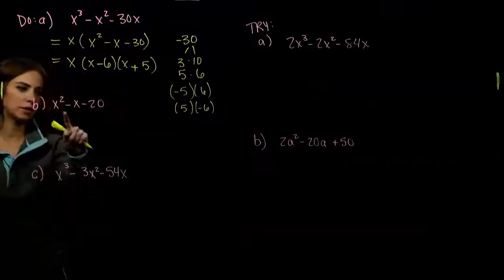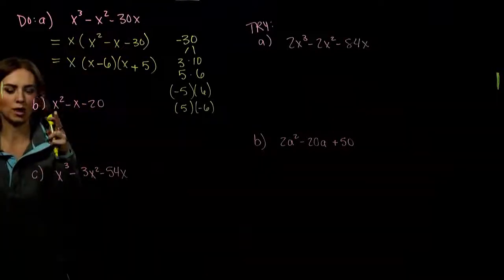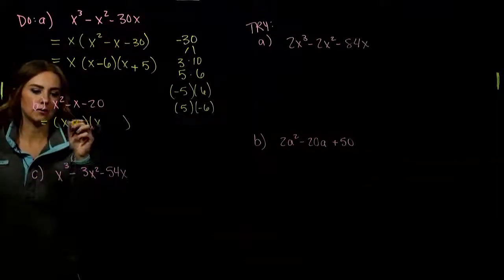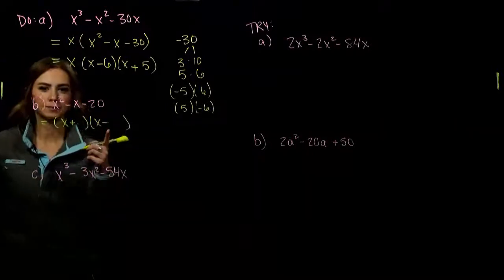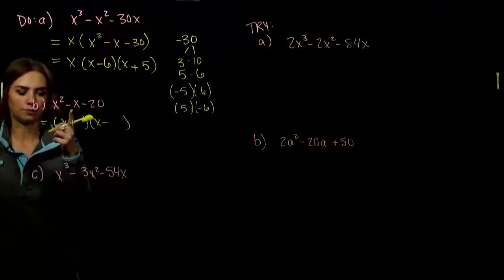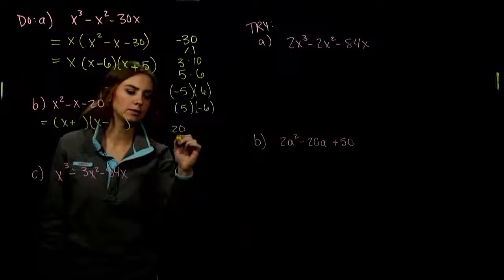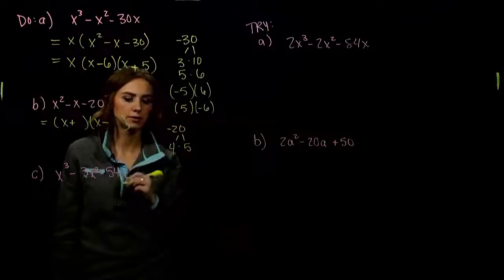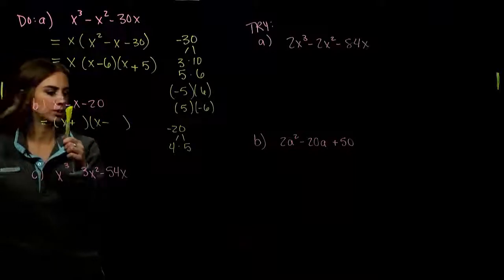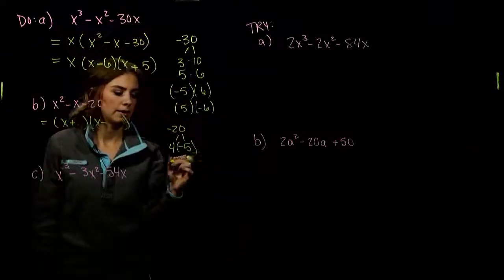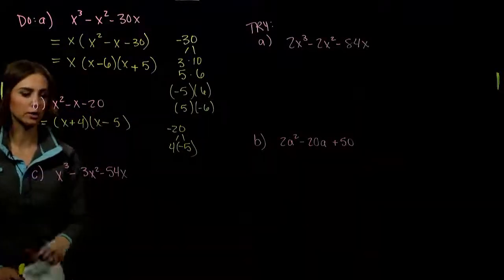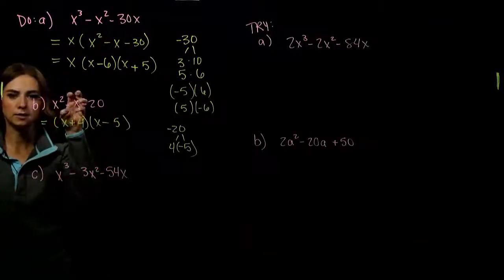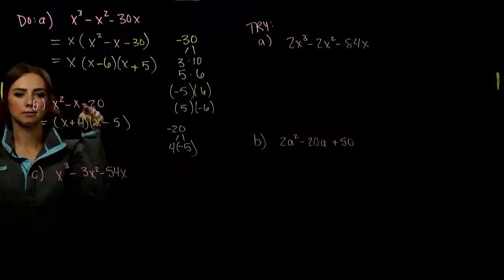Next example — nothing common to take out, 1 on the front, breaks into x and x. We need to multiply to be negative — one positive, one negative. The larger one needs to be negative. Factors of 20: 1 and 20 too big, 2 and 10 too big. 4 and 5 work. The larger needs to be negative: negative 5 and positive 4. Check: x squared minus 5x plus 4x minus 20. Correct.